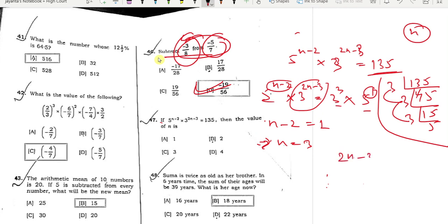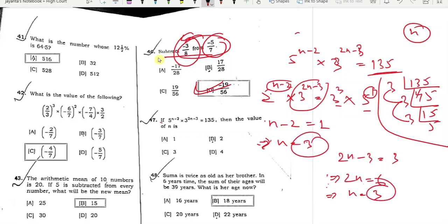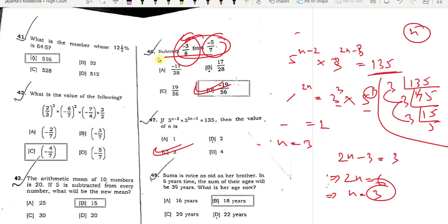Minus 2n minus 3 equal to 3. Now we have 2n equal to sin. Next time we have question 48.